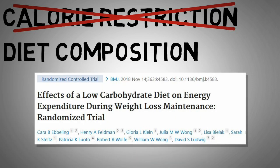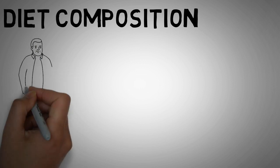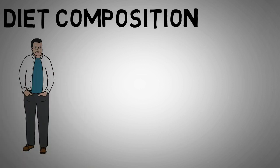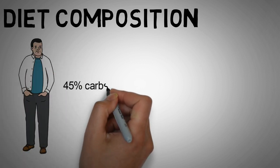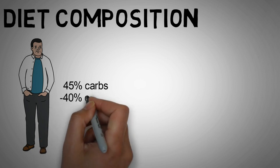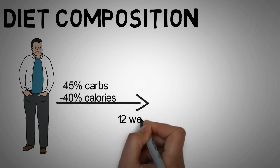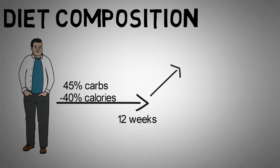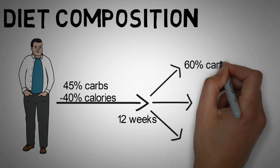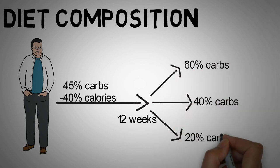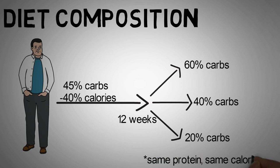Let's look at a study that compared the effects of diets with different amounts of carbohydrates on resting metabolic rate. For this, volunteers first went through a run-in diet with 45% carbohydrates, where the total energy intake was restricted by 40% of their daily calories for 12 weeks. Afterwards, the participants switched to the three different diets that varied in carbohydrate content. 60%, 40%, or 20% carbohydrates. Protein and calories were the same across all three diets.